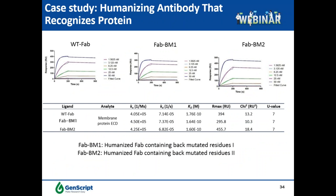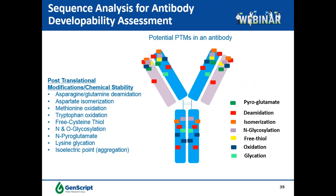In a case study for antibody humanization using FASEBA screening, after the humanization process the antibody affinity was retained and even increased. We also included thermal stability screening with our patented FASEBA platform during the humanization process. For therapeutic lead selection and optimization, antibody drug developability assessment is very critical, especially for post-translational modifications such as asparagine and glutamate deamidation, asparagine isomerization, methionine and tryptophan oxidation, free cysteine, N- and O-glycosylation, pyroglutamate, lysine glycation, and isoelectric point and aggregation.